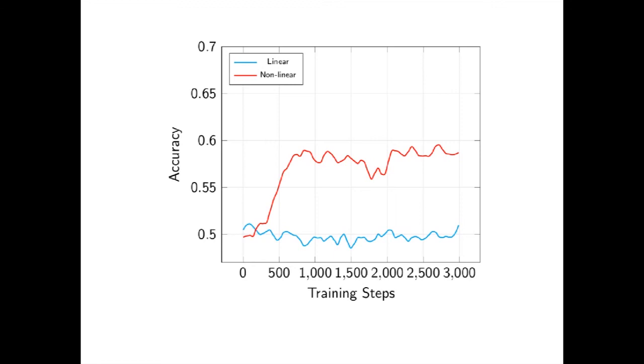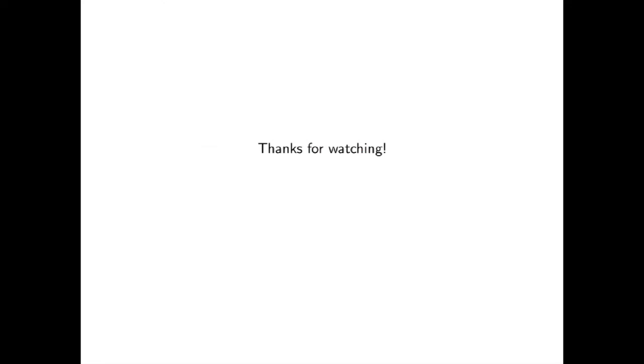However, once non-linearity is added to the neural network, we are able to achieve results of almost 60%. And our final model, using what are called convolutional neural networks, is able to achieve accuracies of as high as 70%, which is in line with the industry standard tool. This shows that our convolutional neural network is able to achieve accuracies as good as the industry standard, while significantly increasing efficiency in terms of run time.